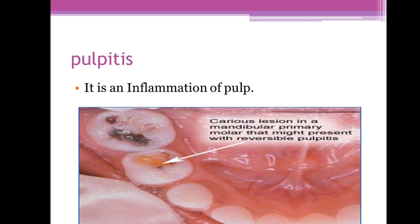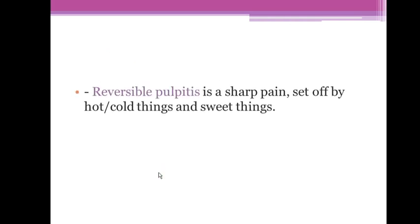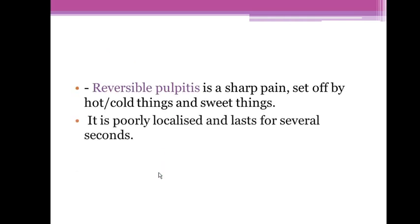Reversible pulpitis means that the pulp is vital. The pulp here is vital — we can fill the cavity and save the tooth.